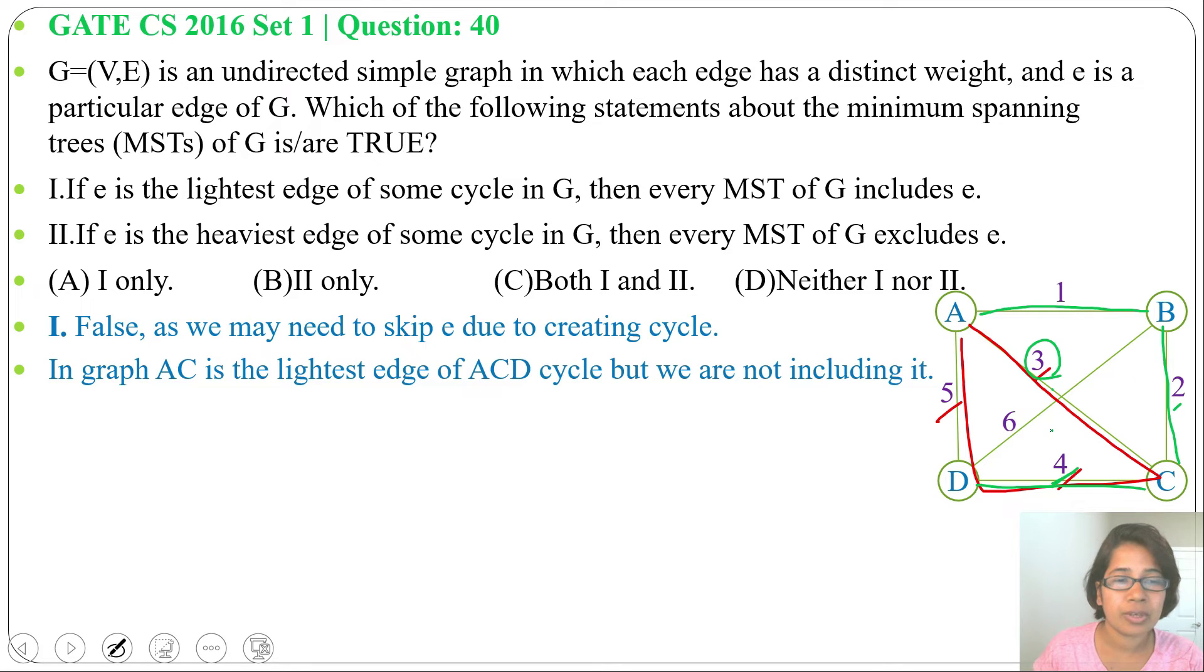So this is false. AC is the lightest edge of A, C, D cycle but we are not including it as it is creating cycle. So every lightest weight of this cycle need not necessarily be included in the MST, we may exclude it. So that's why statement 1 is false.